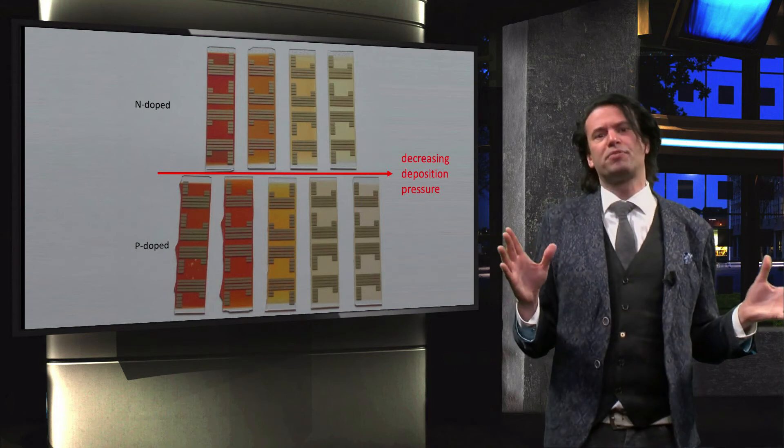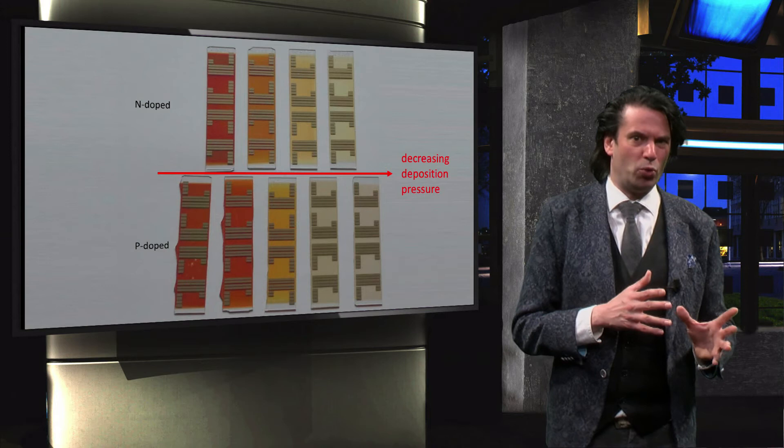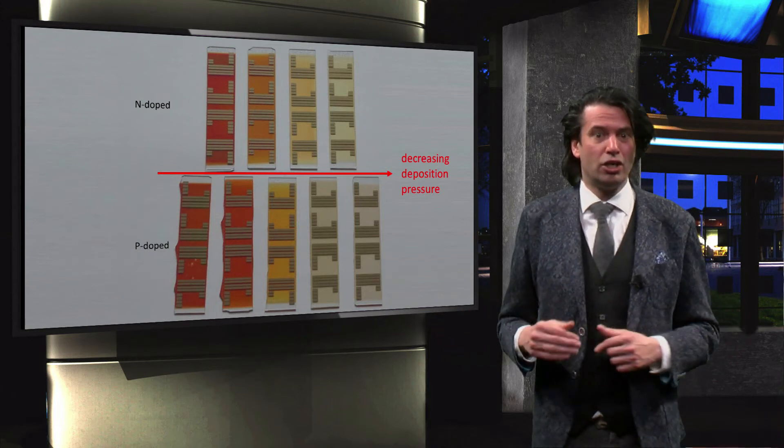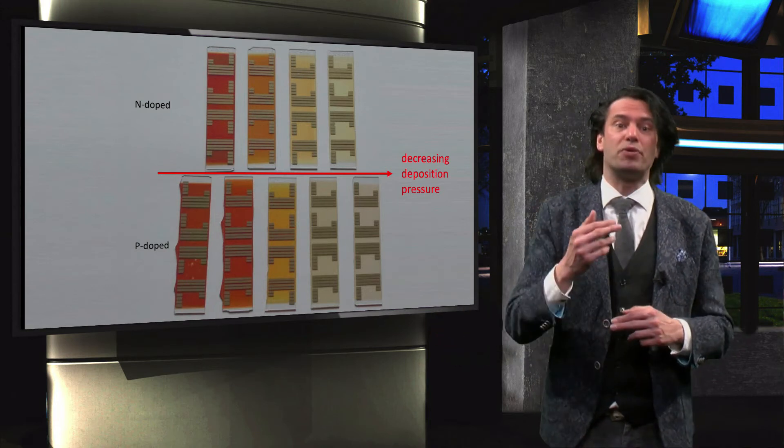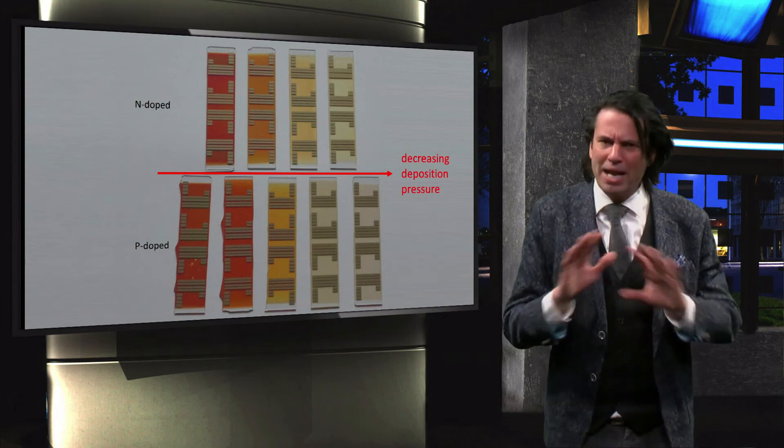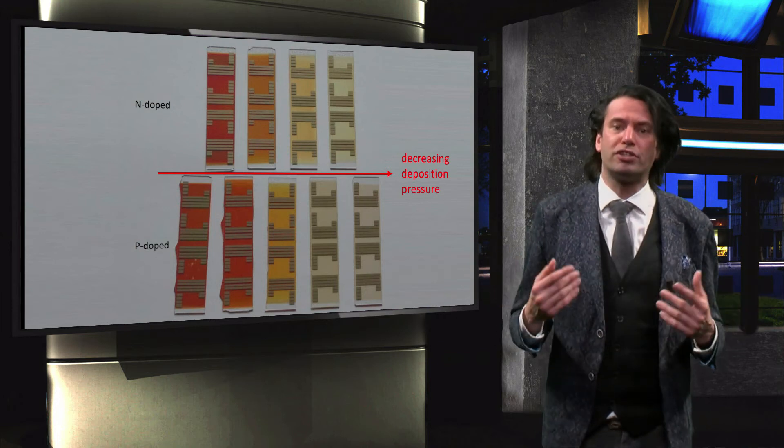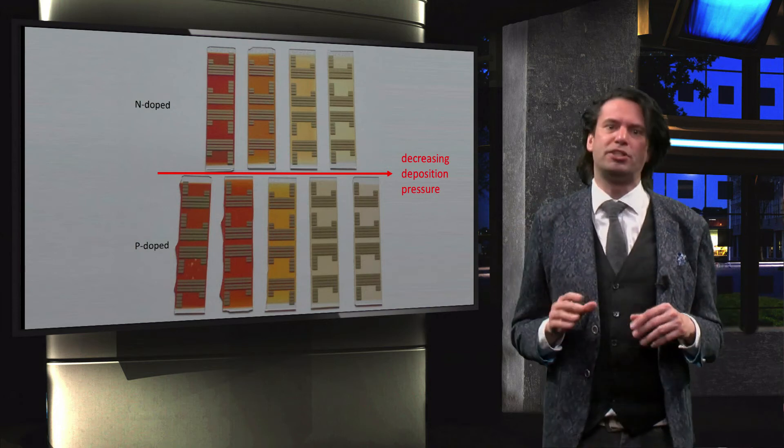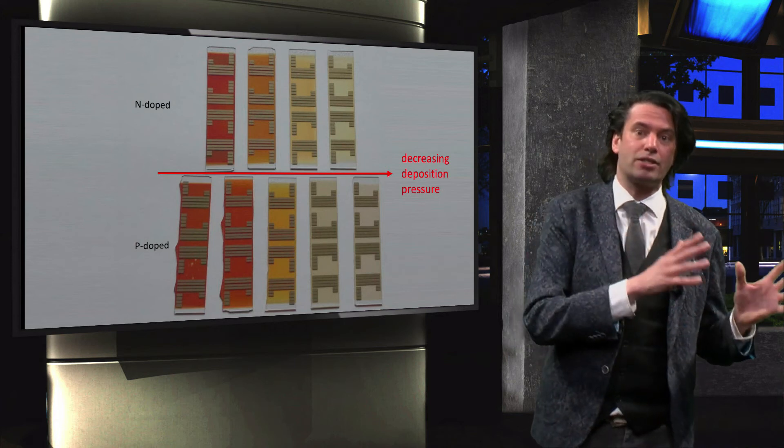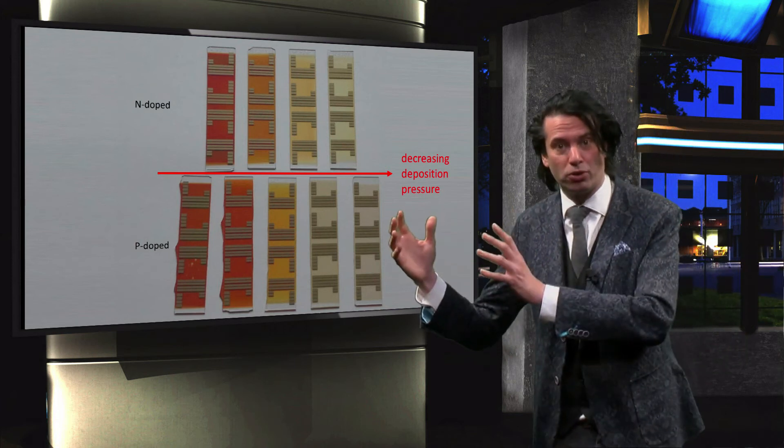Unfortunately, as the optical properties become less favorable with decreasing oxygen content, the conductivity actually increases. Like with many materials, therefore, the tuning of silicon oxide often comes down to a balance between the electrical and the optical properties.